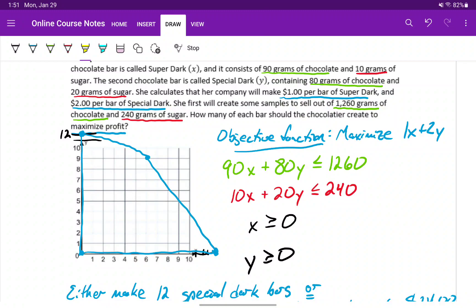So to recap, we took the information that we could pull out of the problem, we translated that into our objective function, and then our system of inequalities. We found that bounded shaded region, which gave us our polygon, that region that we want, our feasible region.